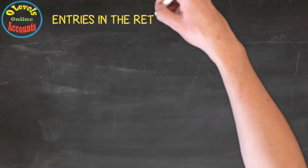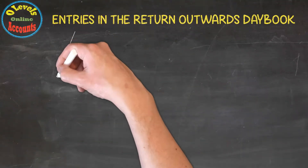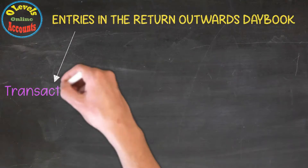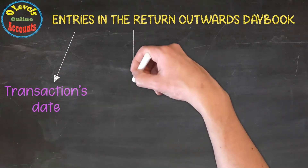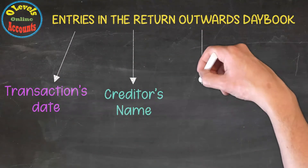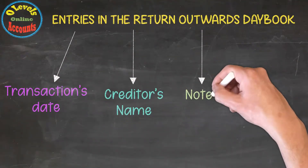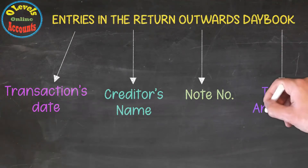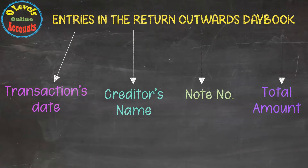There are four entries in the Return Outwards Daybook. Firstly, Transaction Date. Secondly, Creditor's Name. Thirdly, Debit Note Number. And finally, the total amount returned to them.